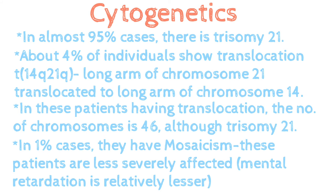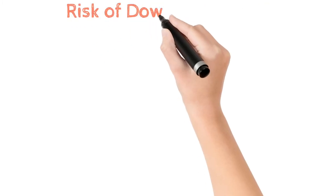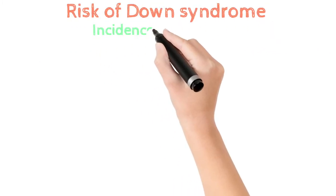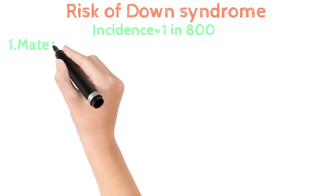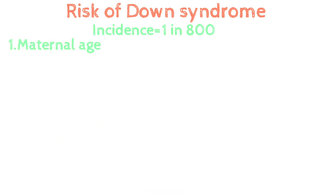Now let's see the risk factors for Down syndrome. The incidence is 1 in 800 births. The first and major risk factor is maternal age. In Israel and Malaysia, the incidence is 1 in 400 and 1 in 500 respectively, which is related to early age of marriage. The high incidence may be due to the physical and mental trauma they face.